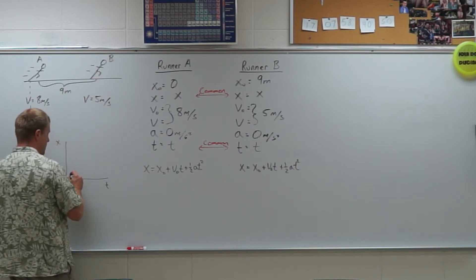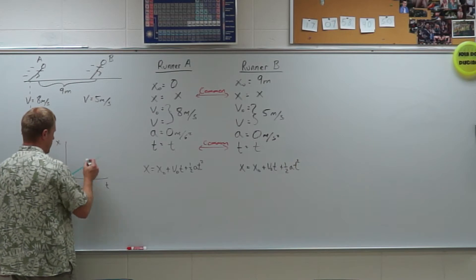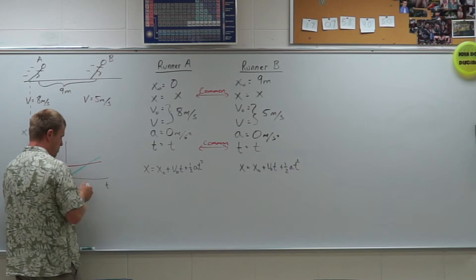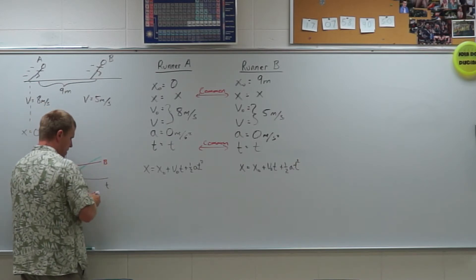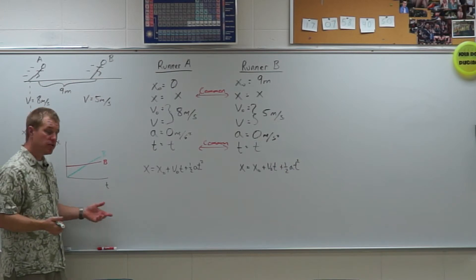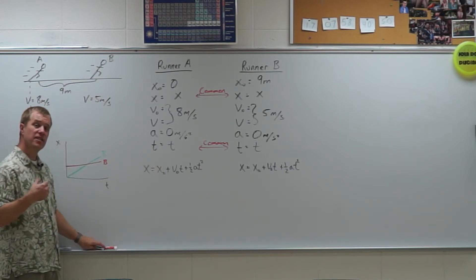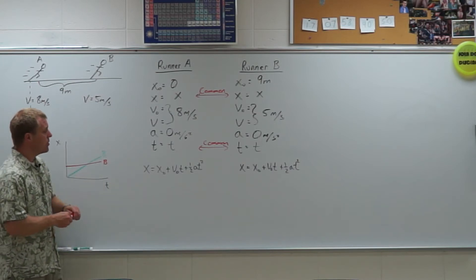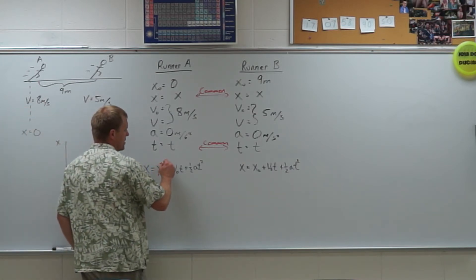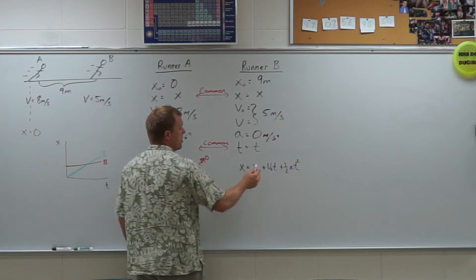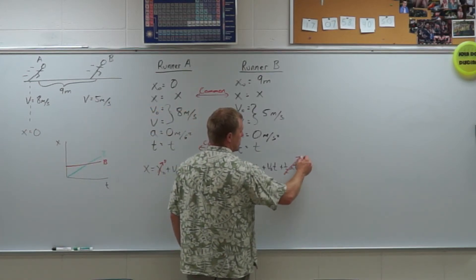And so when we think about those two lines, in this case, I have my two lines that look like this. There's runner A. There's runner B. I'm essentially trying to see when do those two lines cross. So I need to look at those two equations to see when are they equal.